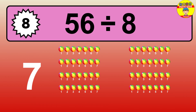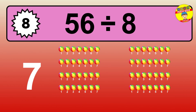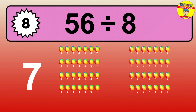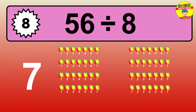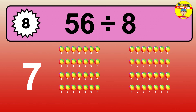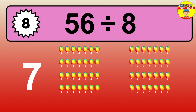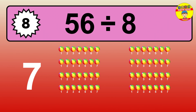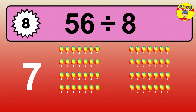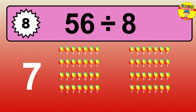Let's go to the solution. Divide the number 56 by 8. Each group contains 8 units, so dividing 56 by 8 results in 7 equal groups. Thus, the result is… 56 divided by 8 equals 7.